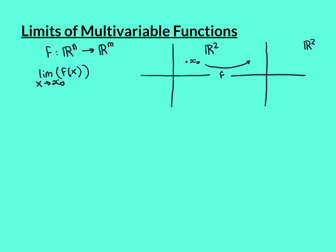The notation for the limit of a multivariable function is exactly the same. We write the limit as x approaches x0, where x0 is now some point in Rn — so it's a vector — of our function f of x, which is a vector function. The output is not just a single real number unless m is 1, but more generally a vector. So it takes as input a vector and gives out a vector. I've drawn a picture for the example n equals 2 and m equals 2.